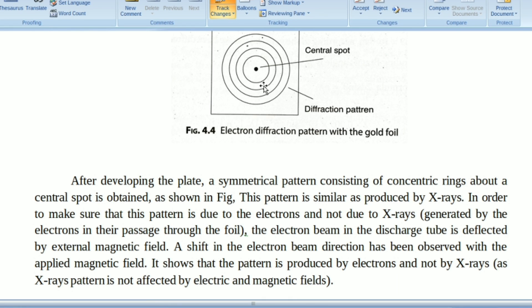In order to make sure that this pattern is due to the electrons and not due to X-rays, there are no X-rays at all generated by the electrons in their passage through the foil. This pattern is generated due to their passage through the foil.